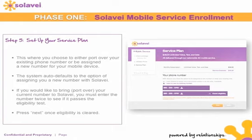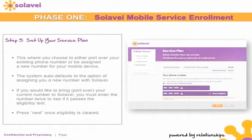Step five is to set up your service plan. This is where you will choose to either port over your existing phone number or be assigned a new number for your mobile device. The system automatically defaults to assigning you a new number. If you would like to port over your current number, you must enter it twice to see if it passes the eligibility test. Please do this now, as it is not guaranteed that you will be able to do it later.